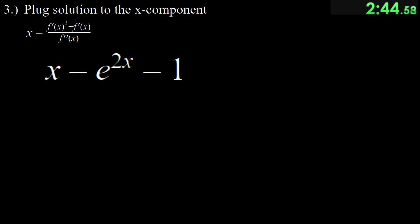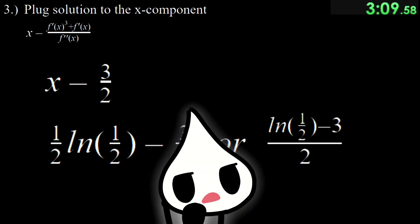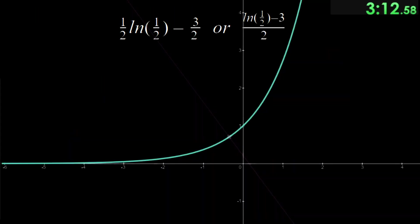Alright, it may be tempting to unsub the x on e to the 2x but we already have a value of e to the 2x when we were doing step 2, which is one half. The one half and the one combine to three halves. There's nothing else to do here so our answer is one half ln one half minus three halves or ln one half minus three all over two if you're a fractionist. This value here is the x coordinate of the point that resides on that normal line we drew.